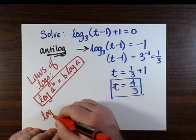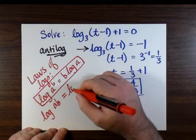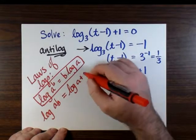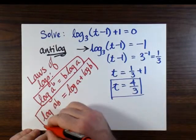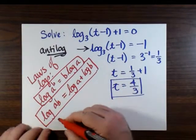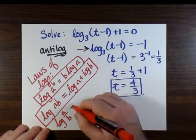And that's log of a to the b equals b log a, meaning that you bring the b to the front. Also, log ab equals log of a plus log of b. That's also called the product law.